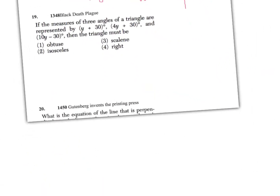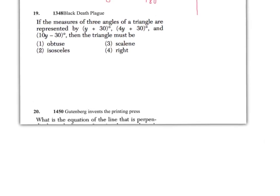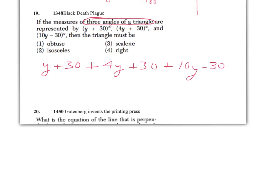Question 19 is an essential one: the three angles of a triangle have to add up to 180°. Don't let the parentheses throw you off — they aren't even really needed in the question. Some students see those parentheses and aren't sure what to do with them. Just make them all add up to 180°, find out what y equals, plug it back in, and then determine what kind of triangle it is based on the angle measurements you get.